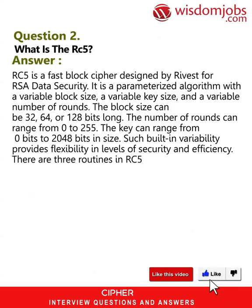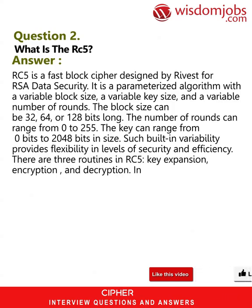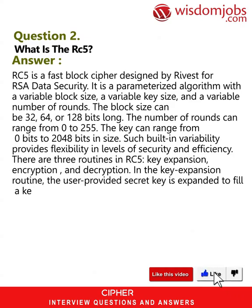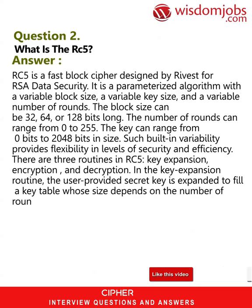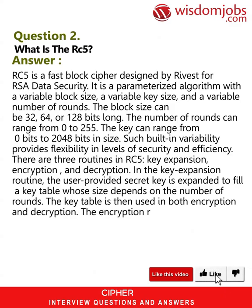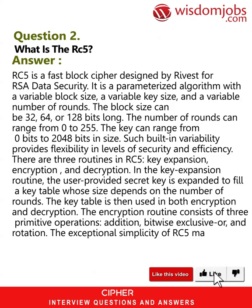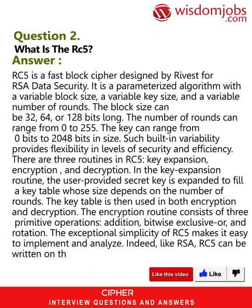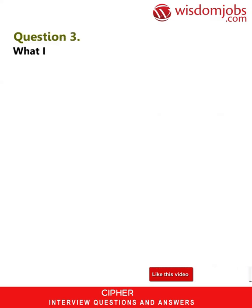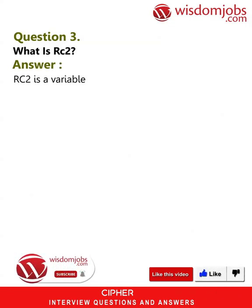There are three routines in RC5: key expansion, encryption, and decryption. In the key expansion routine, the user-provided secret key is expanded to fill a key table whose size depends on the number of rounds. The key table is then used in both encryption and decryption. The encryption routine consists of three primitive operations: addition, bitwise exclusive-OR, and rotation. The exceptional simplicity of RC5 makes it easy to implement and analyze. Like RSA, RC5 can be written on the back of an envelope, except for key expansion.